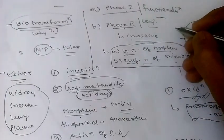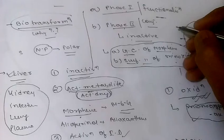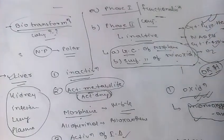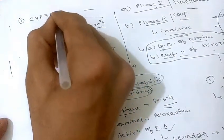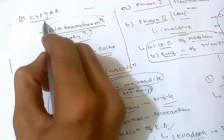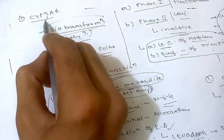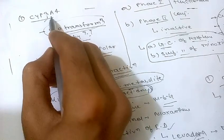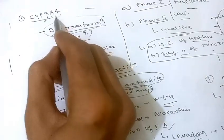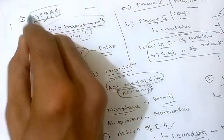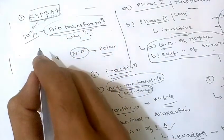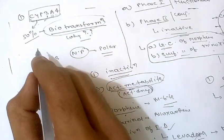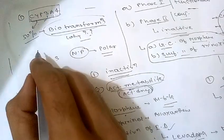There are more than 100 cytochrome P450 isoenzymes differing in their affinity for various substrates. The most common is CYP3A4. In the naming, the number indicates the family, the letter indicates the subfamily, and the final number indicates the individual isoenzyme. CYP3A4 is the most important, as more than 50% of drugs are biotransformed by this isoenzyme.